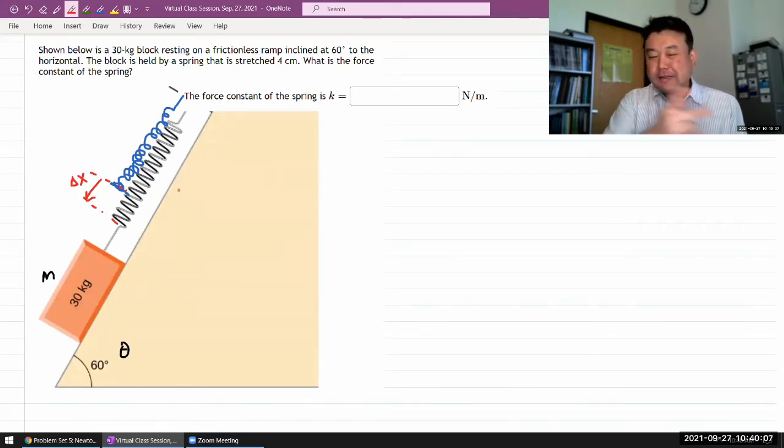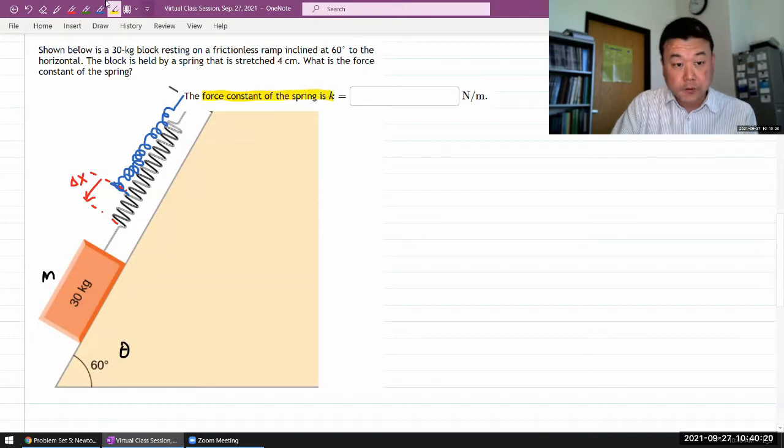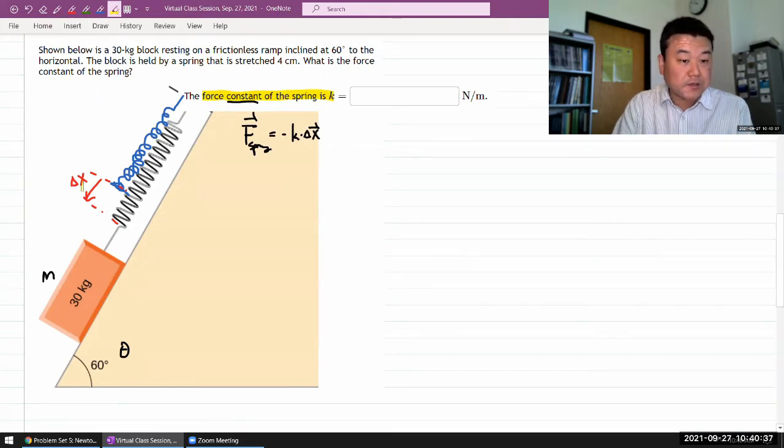The force constant of the spring - if you sum up the spring force, you could relate it through Hooke's law, which says the force due to spring is given by minus k times delta x. So any question about the force constant of the spring, especially once they've given us the delta x, is kind of the same as a question about the spring force itself.